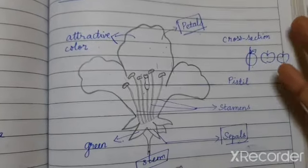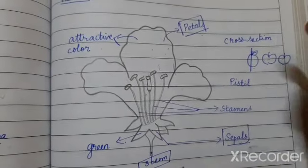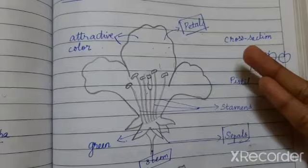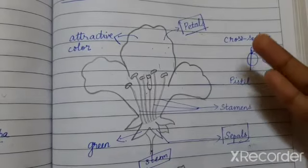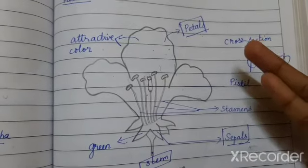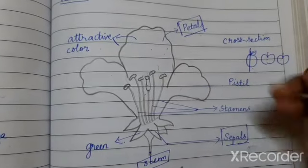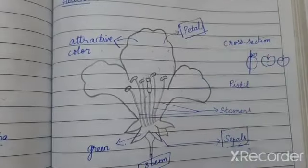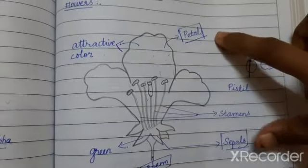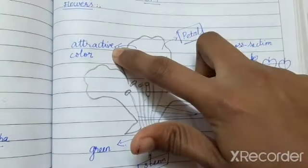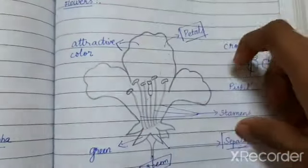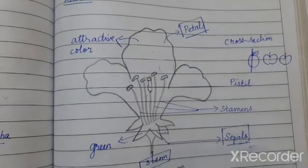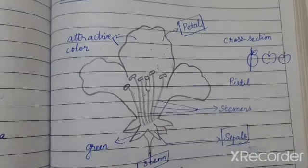Always keep in mind that a flower has four parts. The first pair is petals and sepals — they form a combined pair. Petals means the attractive, colorful part. Sepals means the green colored part attached to the stem.